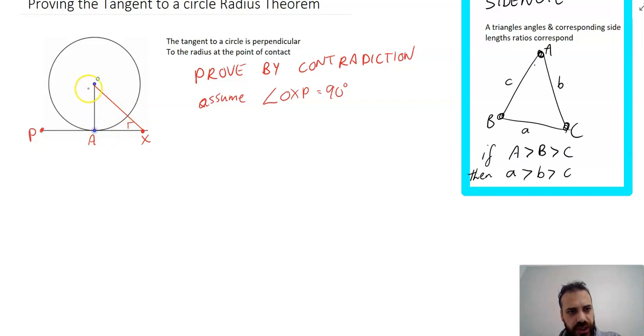The internal angles of a triangle are 180 degrees. If angle OXP is 90 degrees, then angle OAX can't be 90 degrees, because then they'd add up to 180, making the third angle zero. So angle OAX must be less than 90 degrees, based on the internal angles of a triangle.